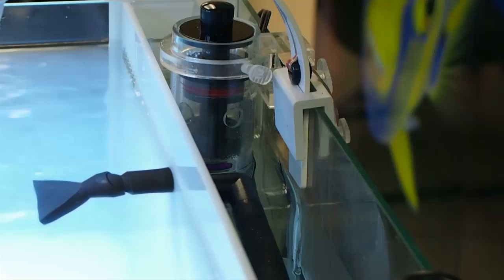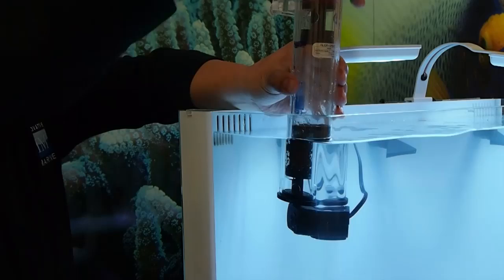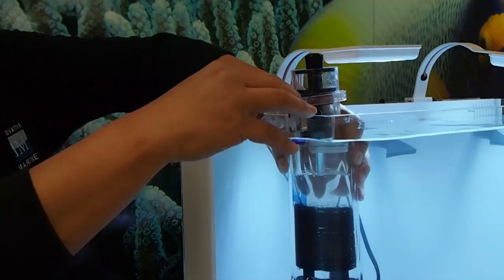Take out your reactor and place it into the front portion of your tank. Adjust your reactor to the water level you just marked. This will ensure that your media tumbles at the same rate in front of your tank as well as in the back of the tank.